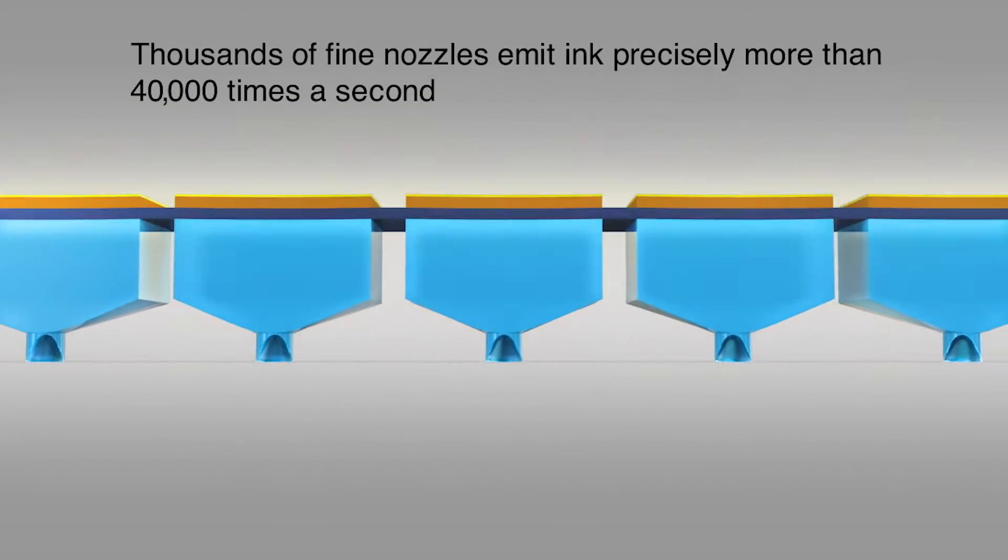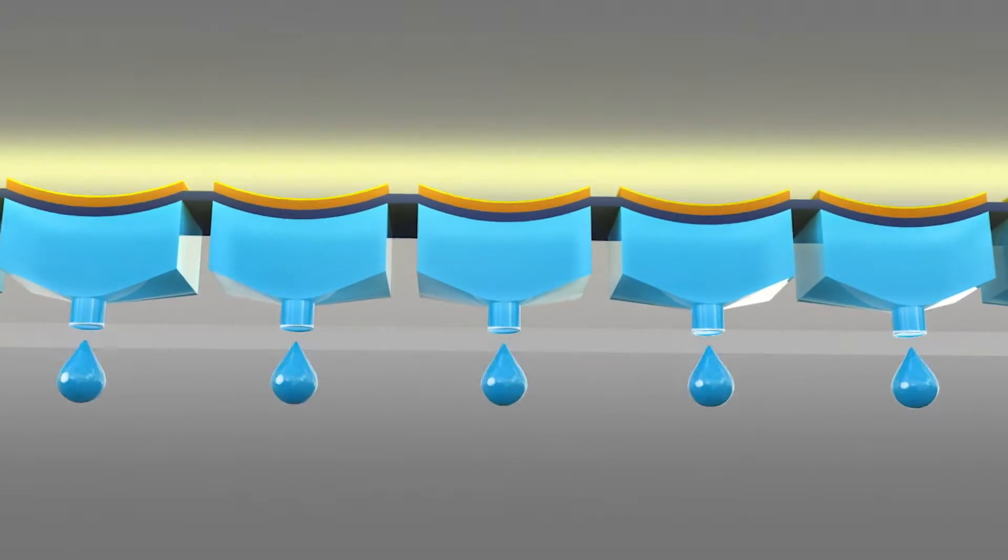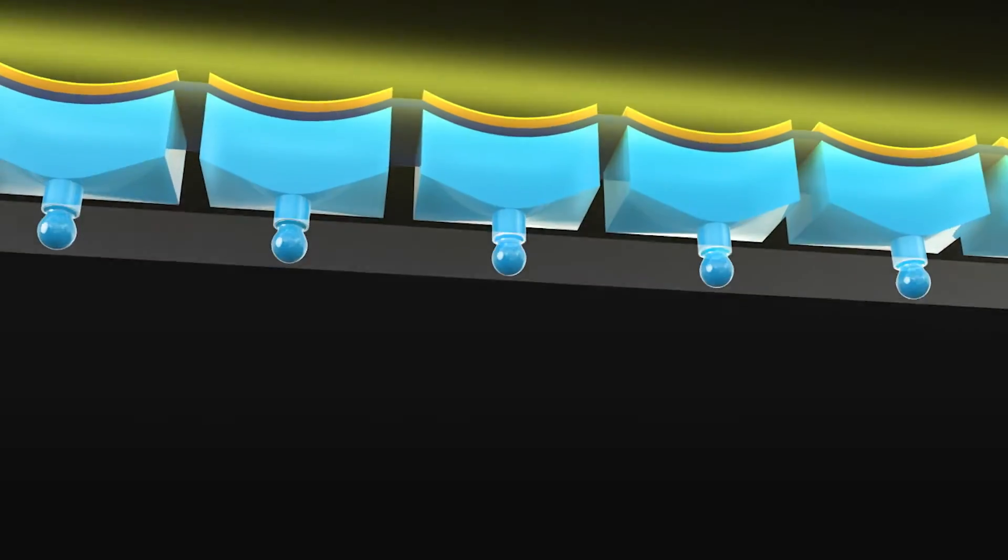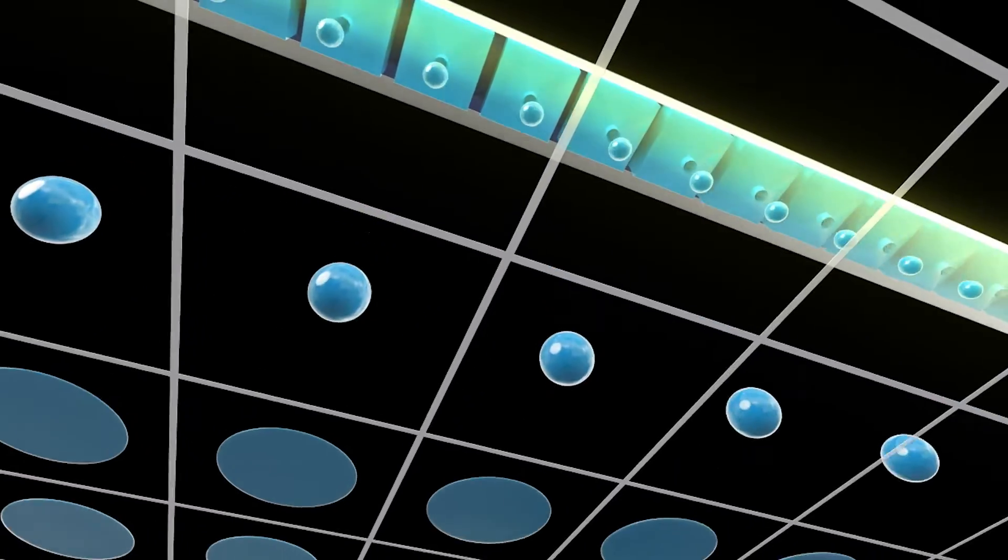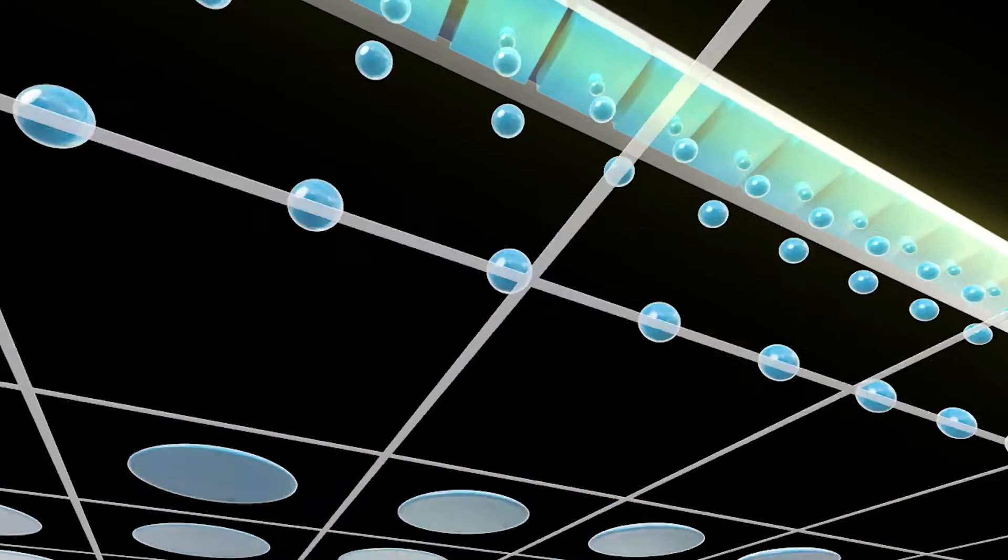Each printhead contains densely arranged rows of these sets, with each one firing precisely the right amount of ink at precisely the right place, more than 40,000 times a second.